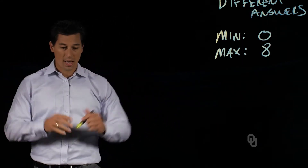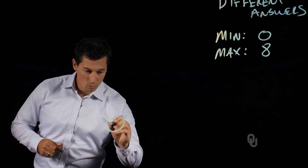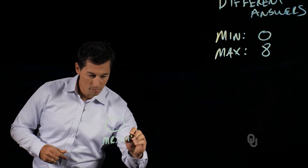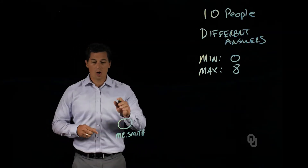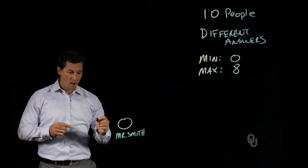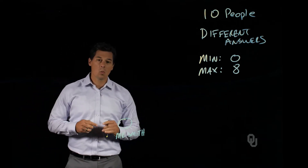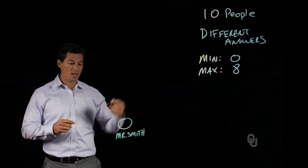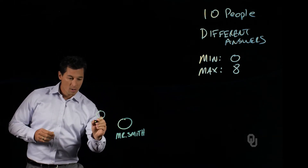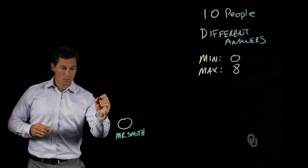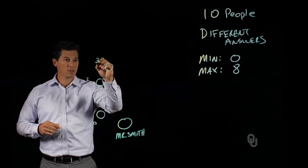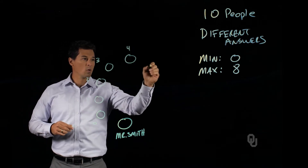Let's visualize our problem. We'll place Mr. Smith here and draw the nine other people around him. We'll label each individual with the number of times they shook hands — here is our anti-social person with zero, then one, two, three, and so on up to eight.